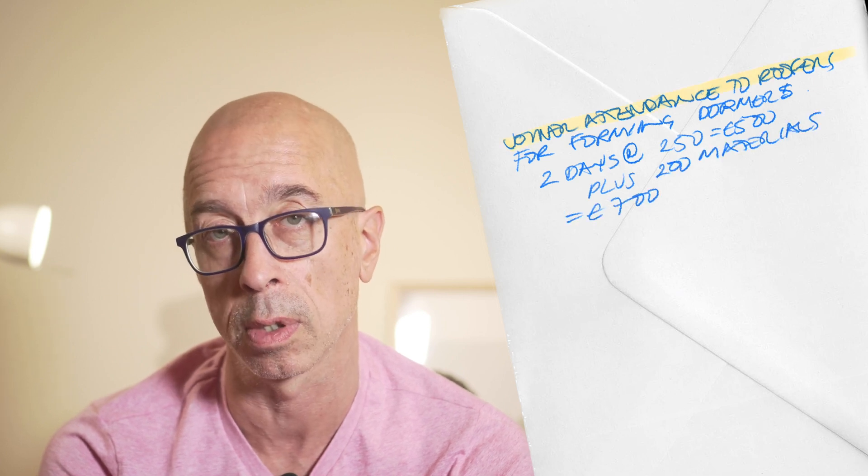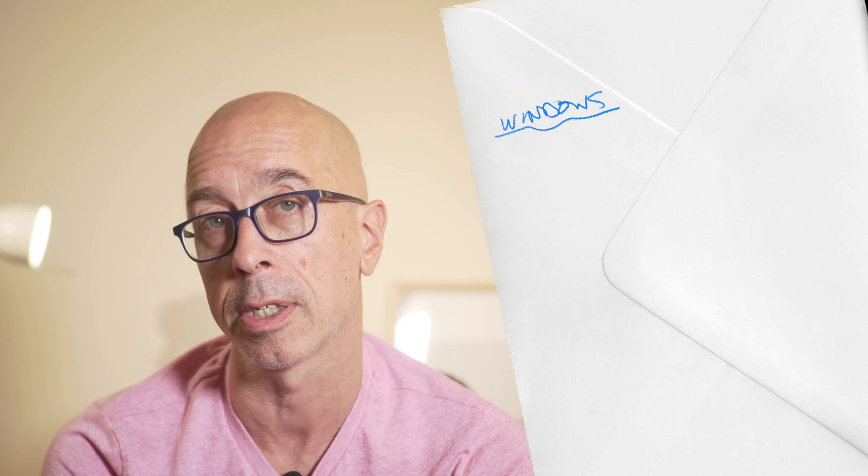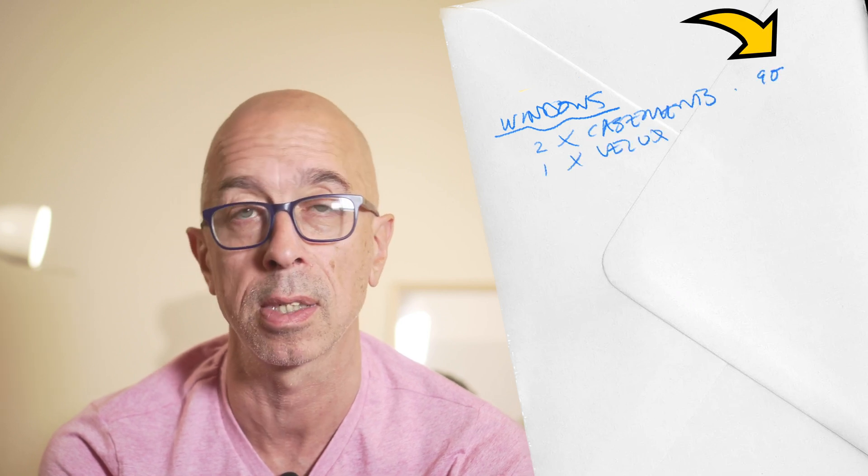We also need to include for the price of the windows. Let's say we have two tilt and turn casements to the dormers, this much each, and one Velux, say this much. So three windows in total.